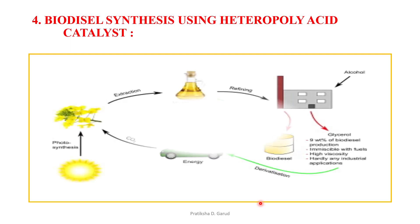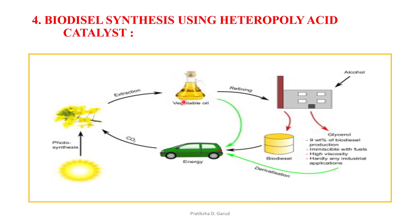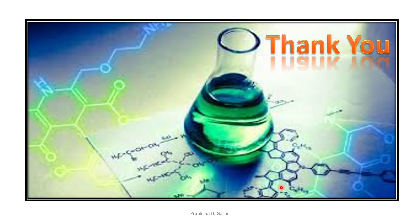The cycle of biodiesel synthesis: from photosynthesis of plants we extract vegetable oils; after refining these vegetable oils we obtain biodiesel, with glycerol as a byproduct; the biodiesel is then used in vehicles. This completes the topic of heterogeneous catalysis. Thank you.